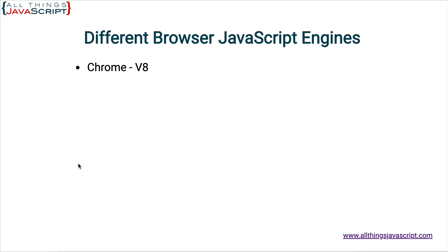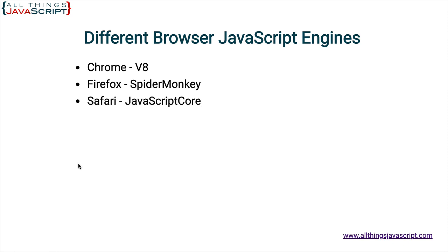First off, we mentioned V8 — that is the name of the engine for the Chrome browser. The name of the engine for Firefox is SpiderMonkey, and this same engine is used by all of the Firefox forks that are out there. Apple calls its engine JavaScriptCore, and it's used in Safari and other WebKit browsers. And finally, Microsoft calls its engine Chakra, which is used in the Edge browser.